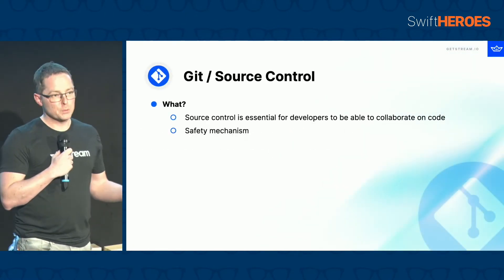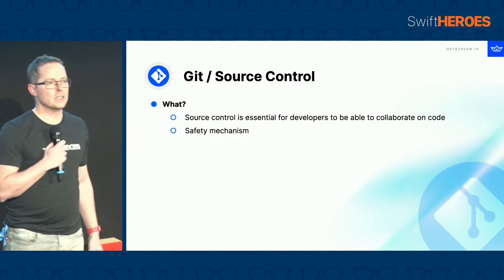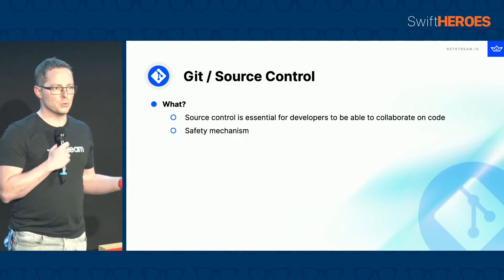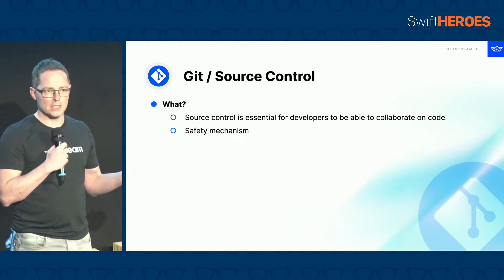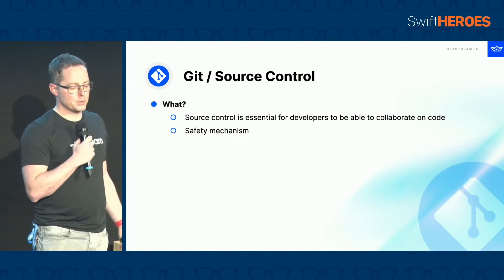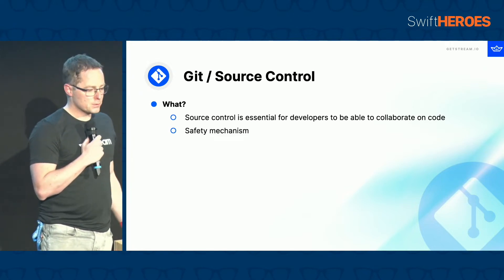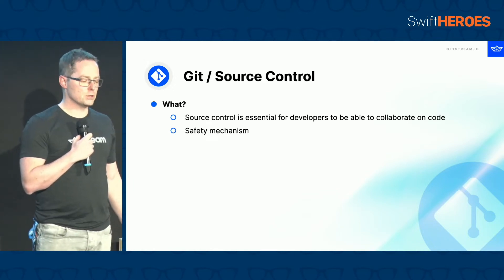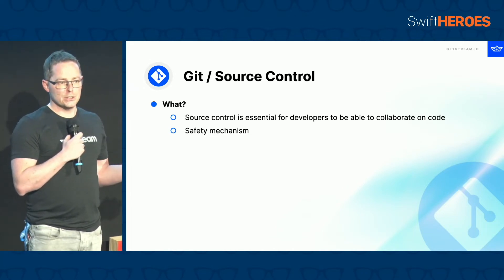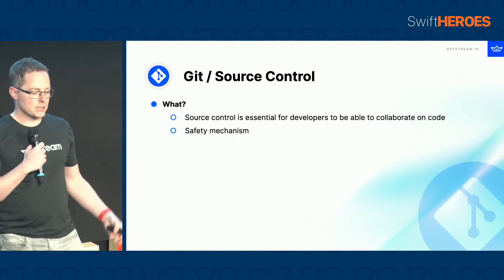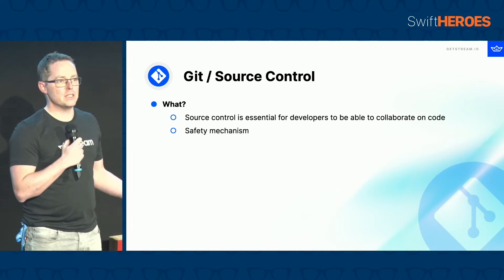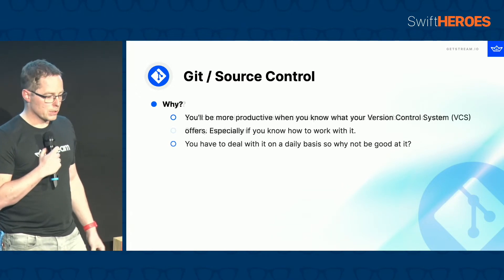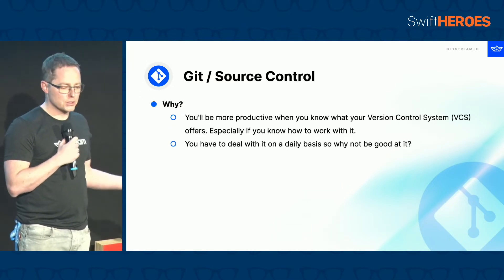Secondary skills — the first one is a bit of a technical one: just the tools of your job. Source control is one of these tools that you, as a software developer, should be really good at. Source control is essential for developers because it allows you to collaborate on code, and it's sort of a safety net. If you make mistakes, you can go back and share what you're working on.